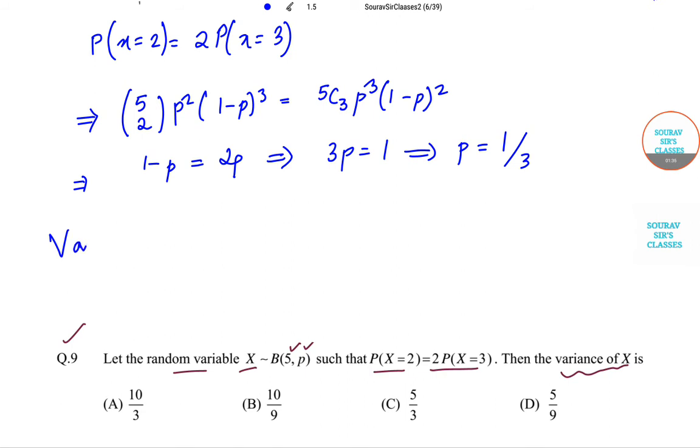So the variance of X will be npq, which is n times p times (1-p). This equals 5 times 1/3 times 2/3, and this equals 10/3, which is option A.